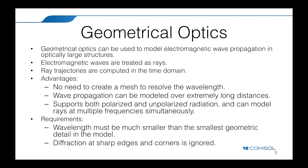What is the Ray Optics module? It can be used to model electromagnetic wave propagation in systems in which the wavelength is much smaller than the smallest geometric detail in the model. The electromagnetic waves are treated as rays that can be propagated through homogeneous or gradient media. Because it is not necessary to resolve the wavelength with a finite element mesh, ray trajectories can be computed over long distances at a low computational cost. Rays can also undergo reflection and refraction at boundaries between different media. The Ray Optics module contains a variety of boundary conditions, including combinations of specular and diffuse reflection.